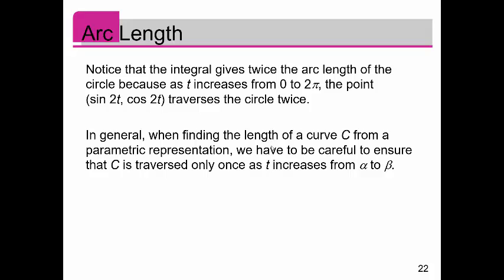Important: notice that the integral gives twice the arc length of a circle because as t increases from 0 to 2π, the point sine of 2t, cosine of 2t traverses the circle twice. So remember that, be careful. In general, when finding the length of a curve from a parametric representation, we have to be careful to ensure that C is traversed only once as t increases from alpha to beta.